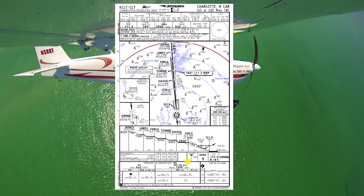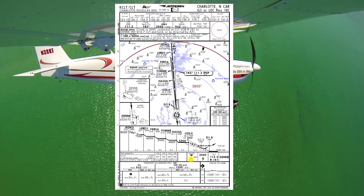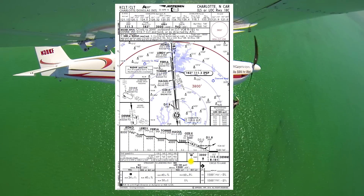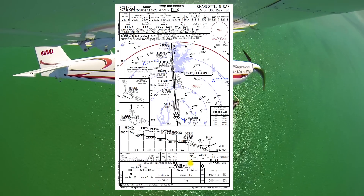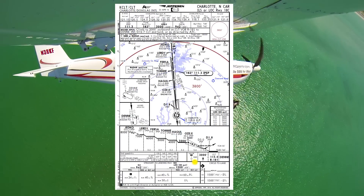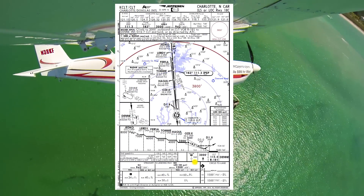Next, what kind of lighting do we have? We have Halo runway lighting with Malsr approach lights and a PAPI on the right.